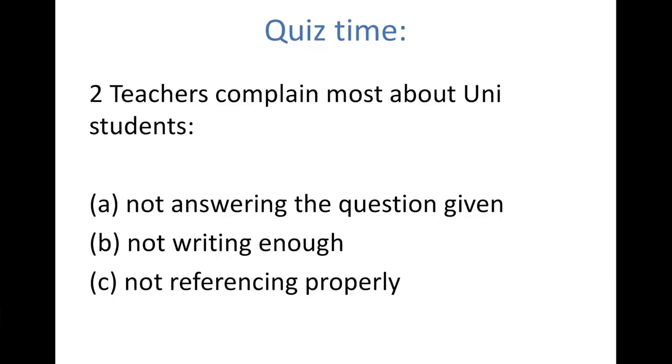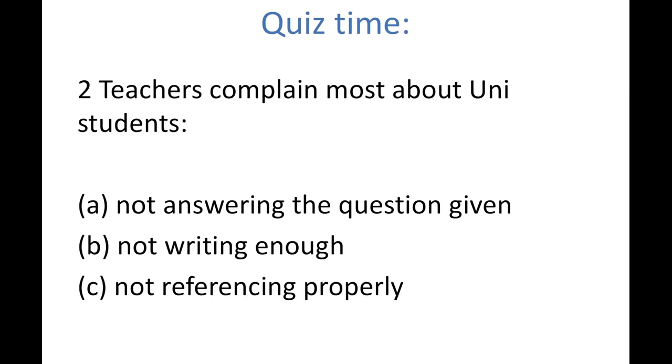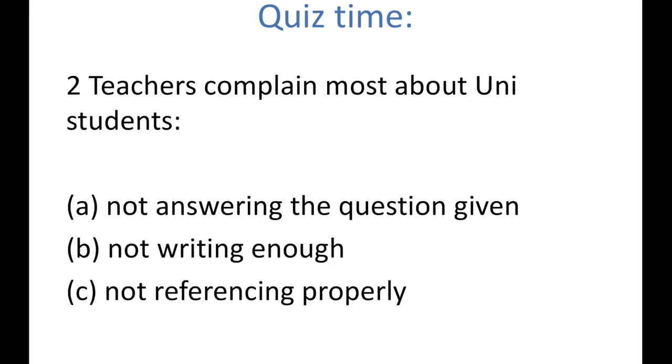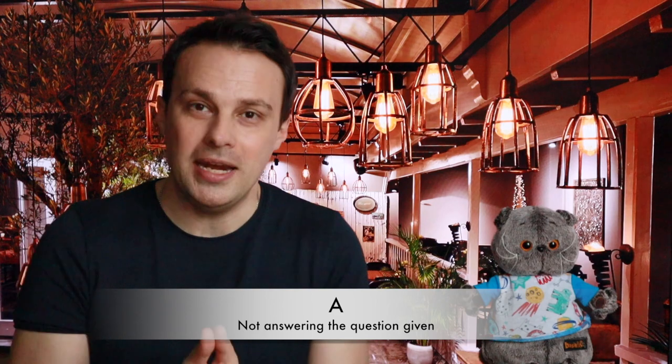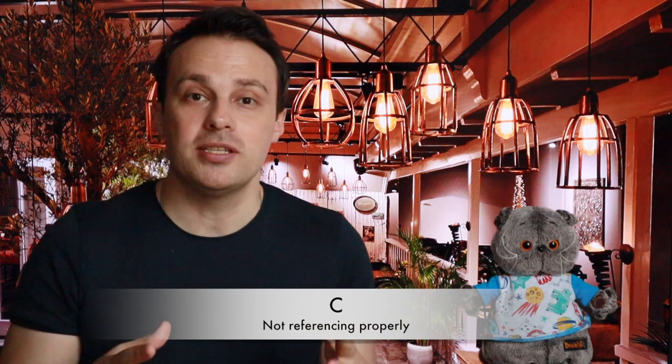Second question: teachers complain most about university students that they — a, do not answer the question given; b, do not write enough words; and c, do not properly reference their academic piece of writing. The correct answer is a — many students do not answer the question given. But I would also say c, because in my teaching experience, I have corrected loads of papers with incorrect references, with students not writing the reference section correctly.